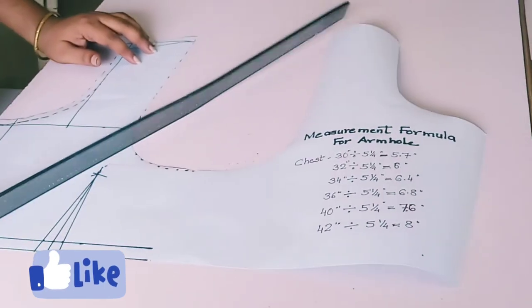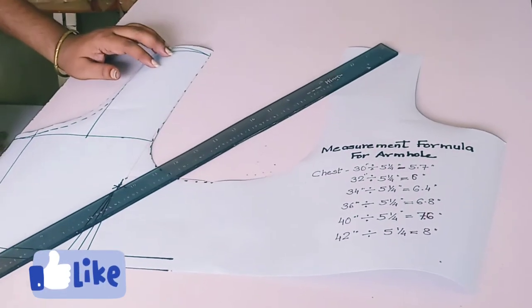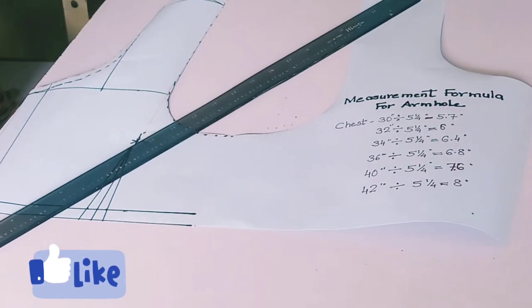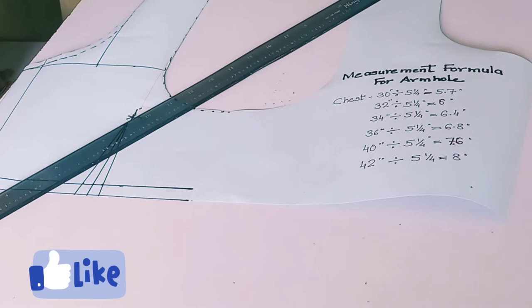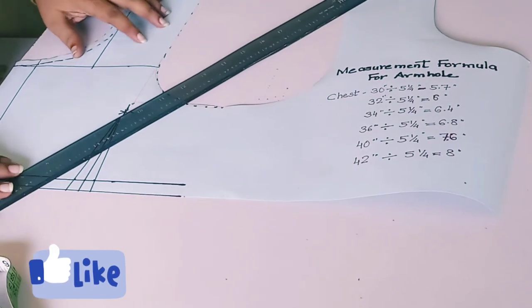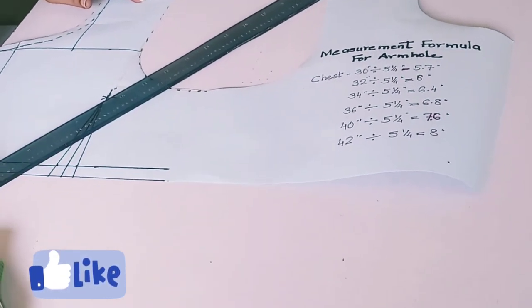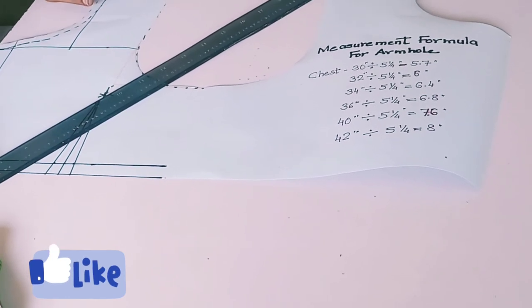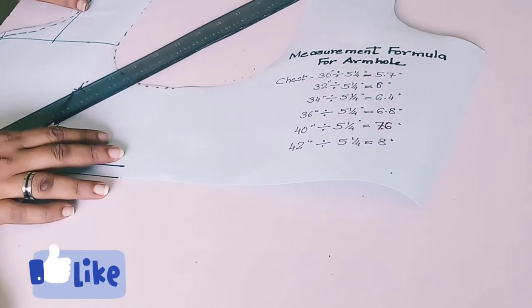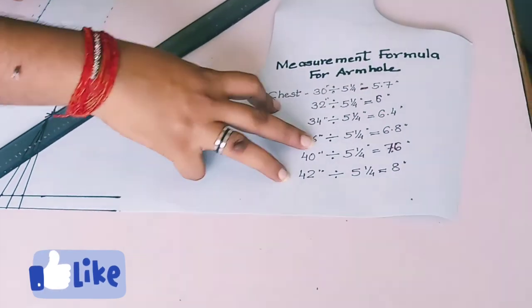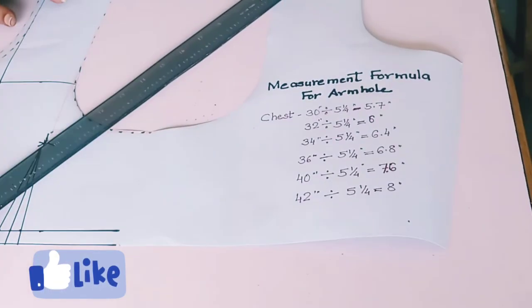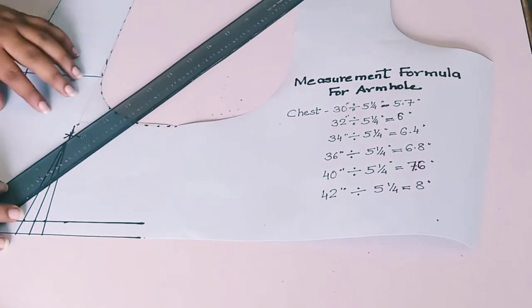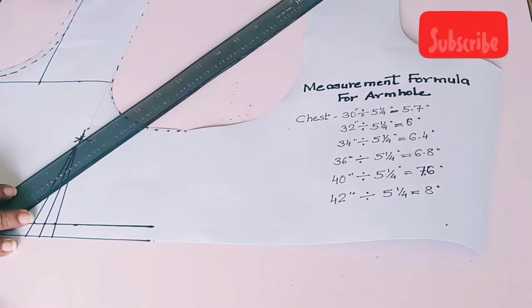This is the formula of armhole measurement we have given for all sizes. For 30, 30 divided by 5 and 1/4 is equal to 5.7. For 32, for 34, for 36, and 40, and 42 chest. This formula you can follow for blouse measurement of armhole, so that you can perfectly take out the armhole.